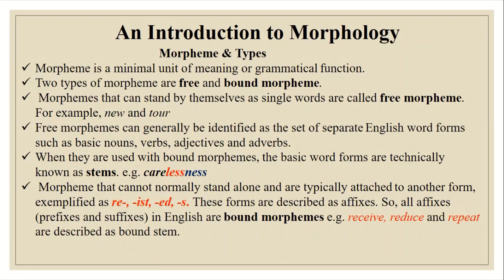Free morphemes can generally be identified as the set of separate English words such as basic nouns, verbs, adjectives, and adverbs. So nouns, verbs, adjectives, and adverbs are also called free morphemes. When they are used with bound morphemes, the basic word forms are technically known as stems.